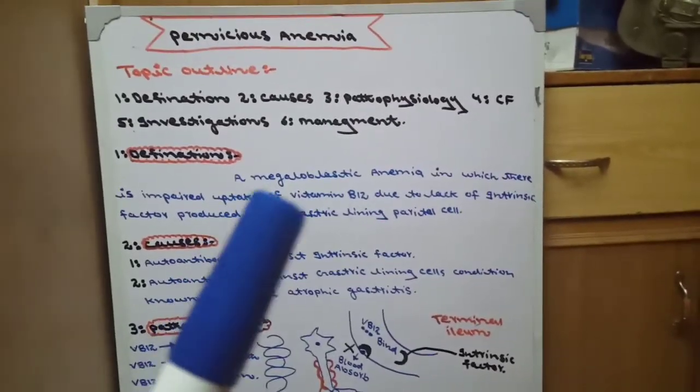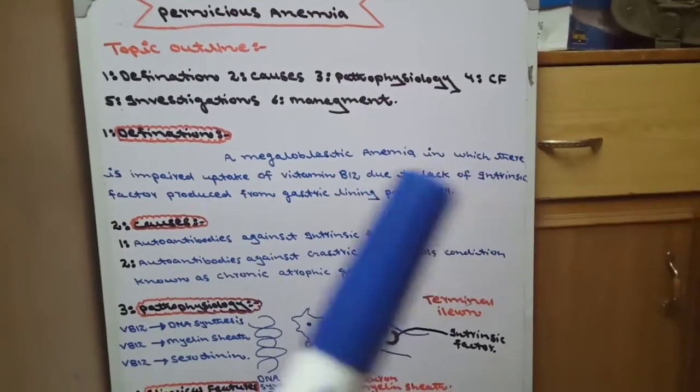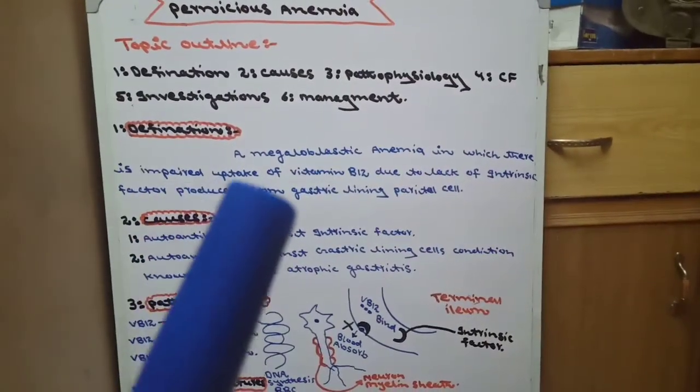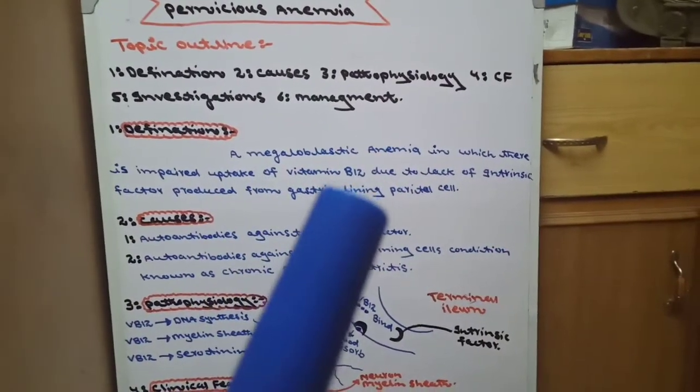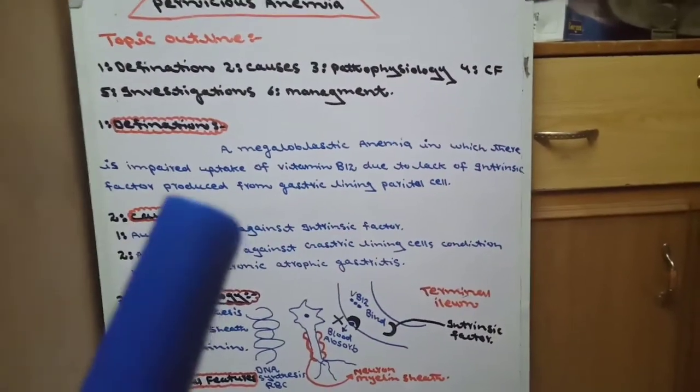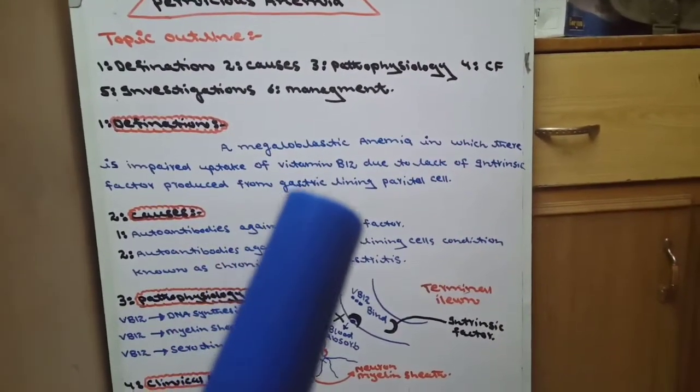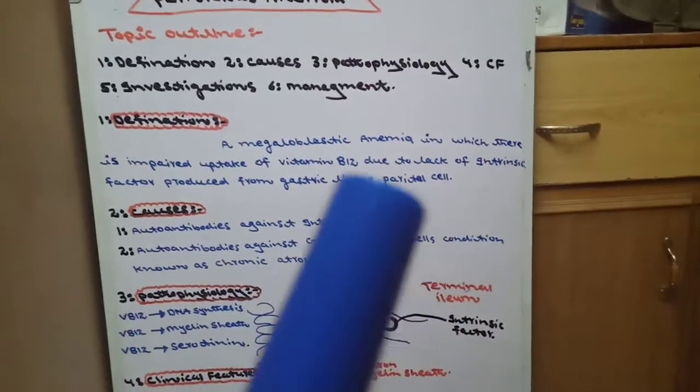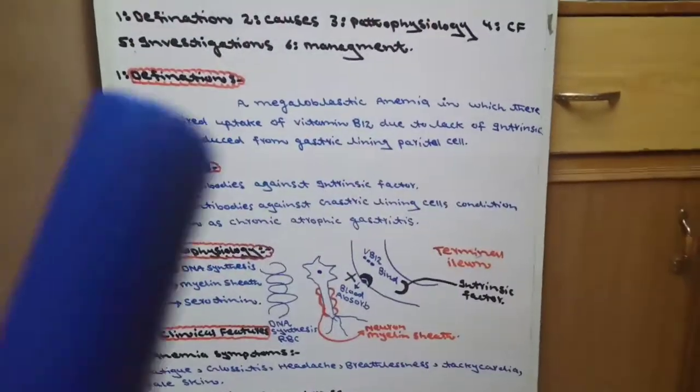Definition: a megaloblastic anemia in which there is impaired uptake of vitamin B12 due to lack of intrinsic factor produced from gastric lining parietal cells. This is the definition.